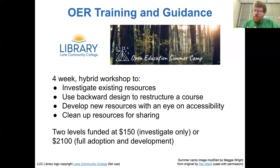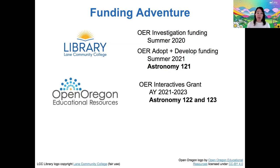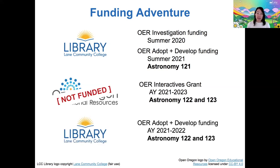Andrea, three summers ago now, participated at one level where she was just investigating those existing resources. Then two summers ago, we both did a full adoption and development method for the workshop to totally redevelop our first fall term astronomy course. As Richard mentioned, I did the OER summer camp investigation in summer 2020. Then in summer 2021, both of us did the OER summer camp adopt-and-develop where we redesigned astronomy 121. In order to continue and redesign astronomy 122 and 123, we applied for a grant from Open Oregon Educational Resources. Unfortunately, we did not receive that grant, but the OER librarian at LCC was able to support us in adopting and developing the OER astronomy textbook for 122 and 123.